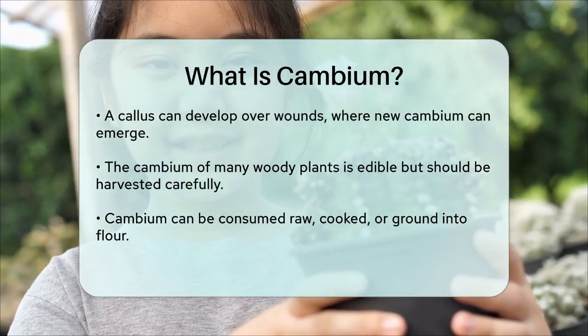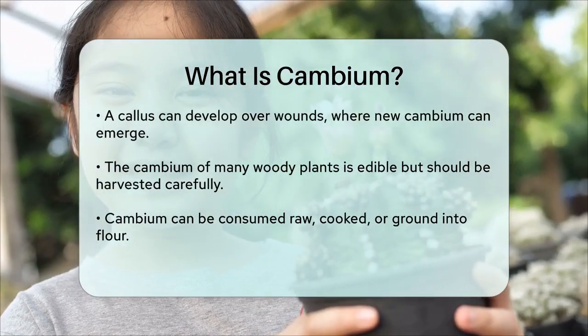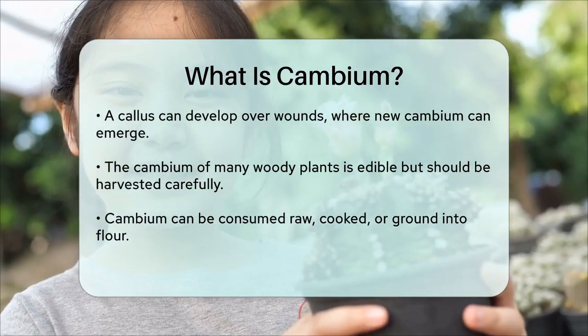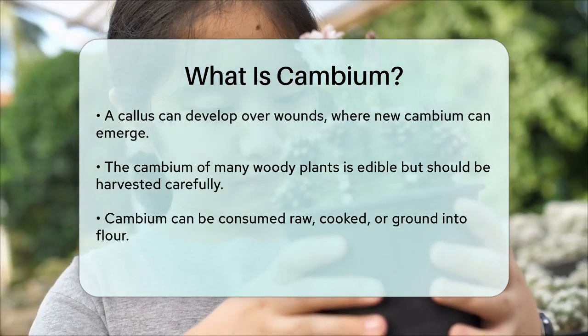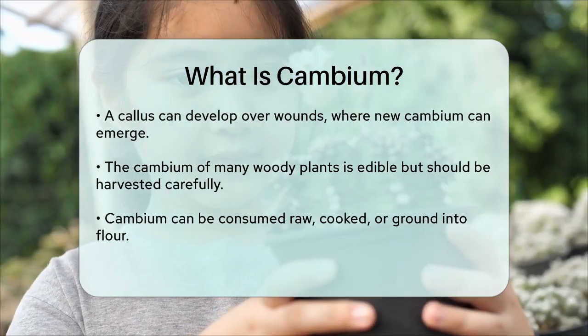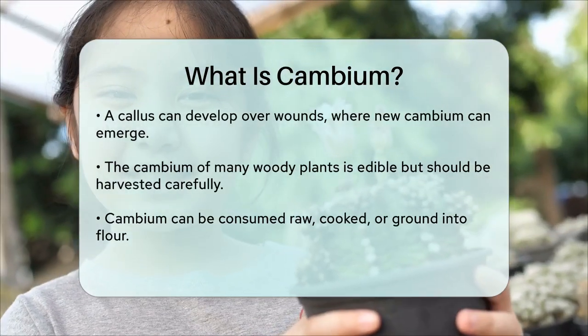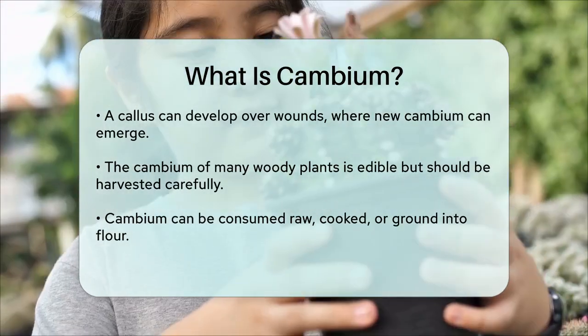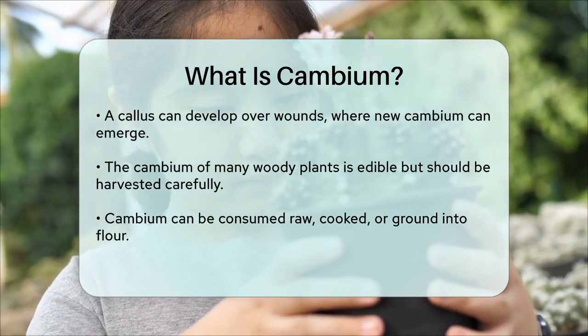Interestingly, the cambium of many woody plants is edible, though it's important not to remove too much of it, as this can harm the plant. It can be eaten raw or cooked and can even be ground into flour for baking.